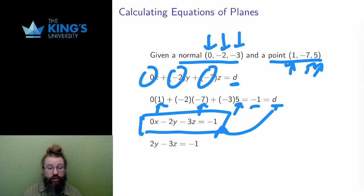The equation of the plane is 0x minus 2y minus 3z equals negative 1. And since the x-coordinate is multiplied by 0, I can write this as negative 2y minus 3z equals negative 1, remembering implicitly that the x-coordinate also exists, even though it's not written.